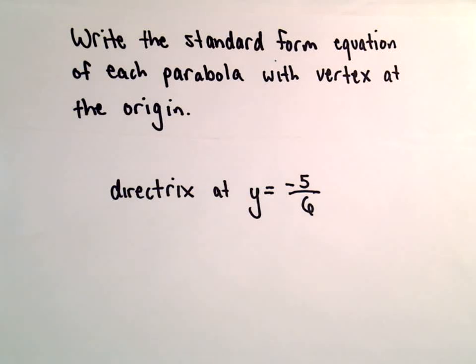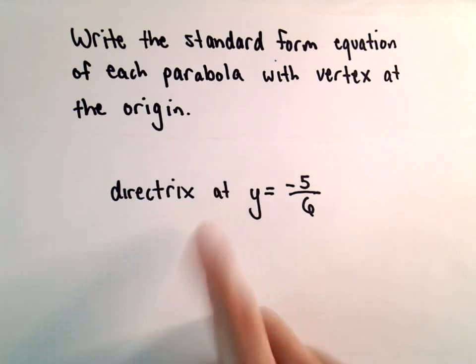All right, in this example, we're going to write the standard form equation of a parabola with a vertex at the origin and a directrix of y equals negative 5 over 6.